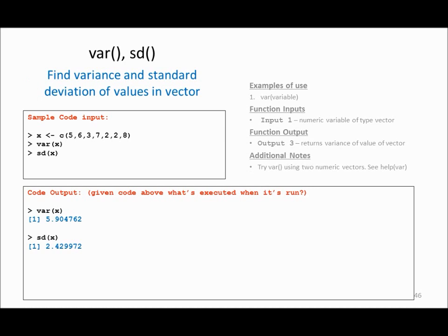There are other statistical functions called variance and standard deviation, which are widely used in statistics. If I have a variable called x with some values, I can call var(x) to find out the variance in the data, and I can also use sd, which stands for standard deviation, to find out the standard deviation in the data.